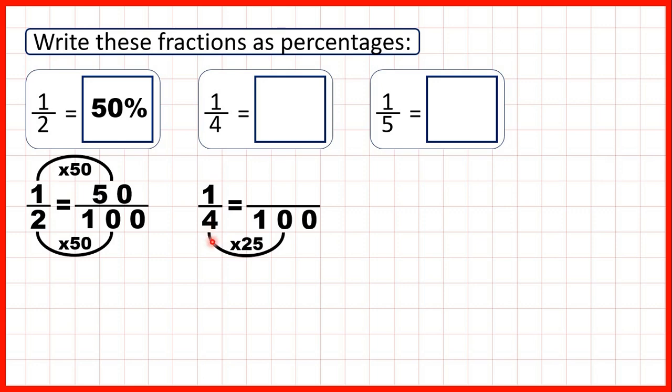So what we do to the denominator, we need to do to the numerator as well, and 1 times 25 is 25. So that's 25%. And it's really important that we don't write 25 over 100%, because the percentage sign already tells us out of 100.